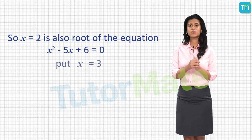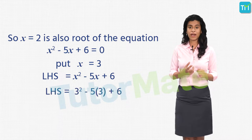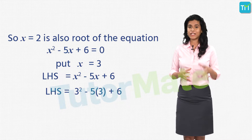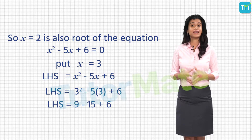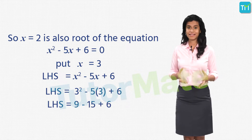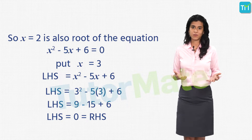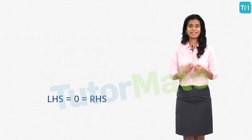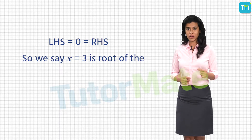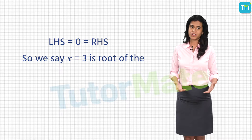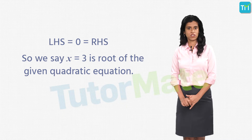Also if we take x equal to 3 in our LHS, it will become 3 squared minus 5 into 3 plus 6, which gives us 9 minus 15 plus 6, that is 0. So at x equal to 3 we get the LHS as 0 and our RHS is also 0, therefore 3 is also a root of the given quadratic equation.